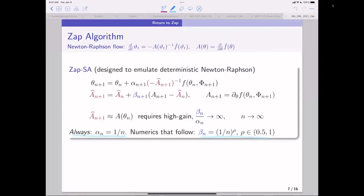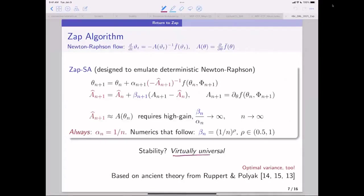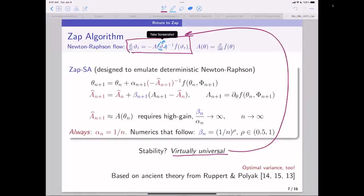And so I always say this, choose alpha n equals one over n. I'll explain why in a moment. And in the numerics, we do this. Aditya claims that he loves rho equals 0.85 during his thesis. I think now maybe we're rethinking that. So stability again is virtually universal because stability of this is virtually universal. And see the notes, papers, details, but under minimal conditions, this converges. And so the same for the stochastic approximation algorithm.